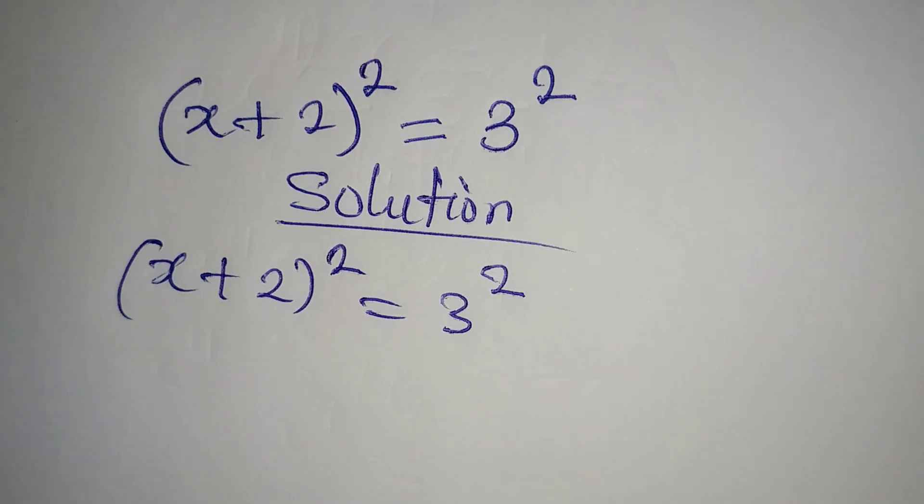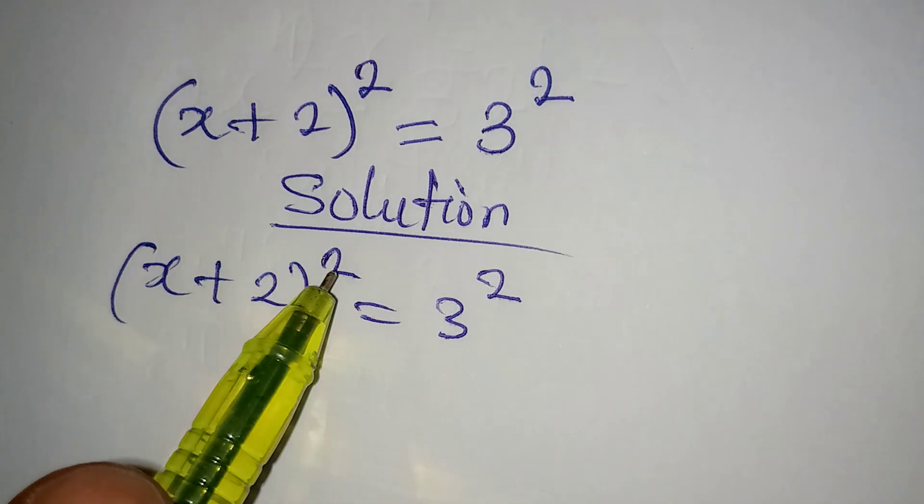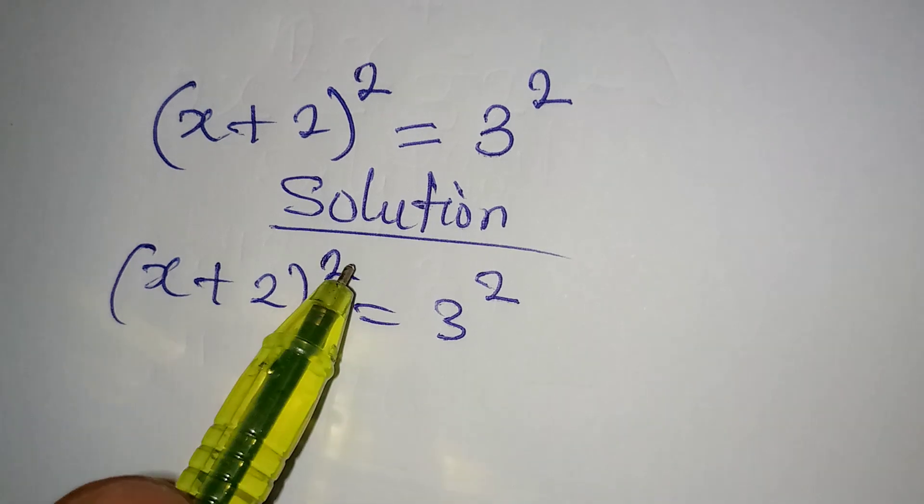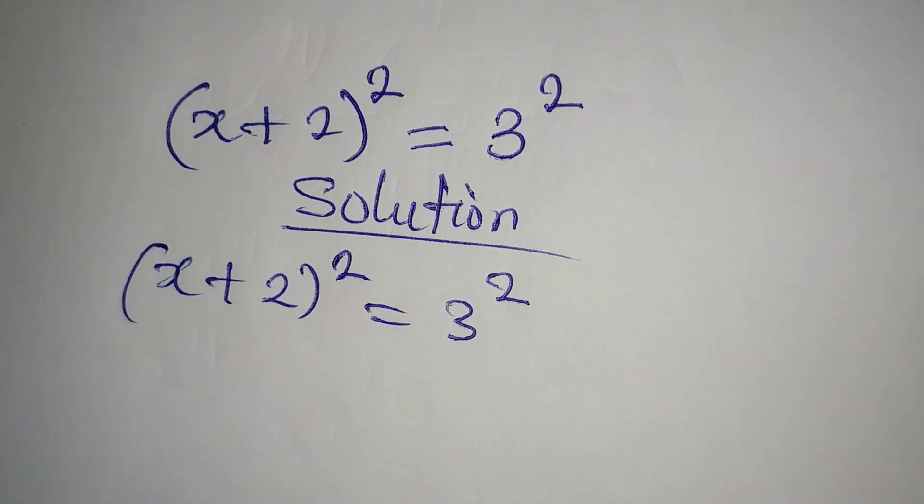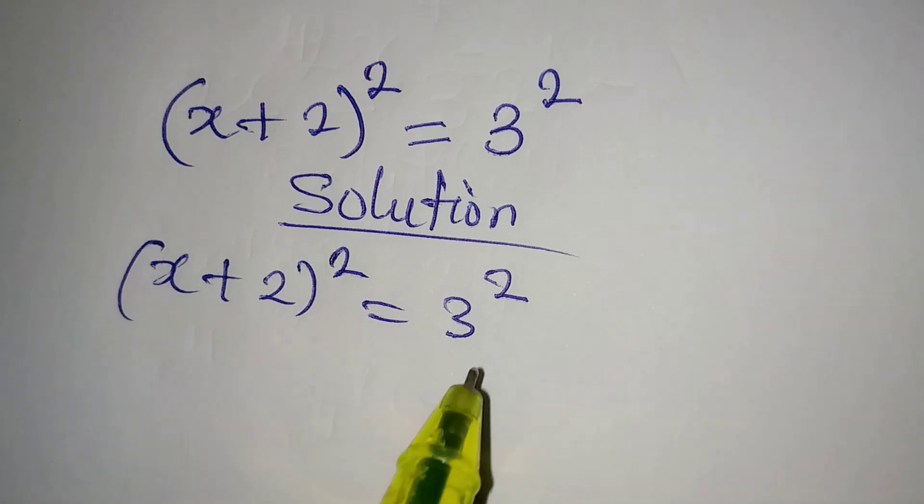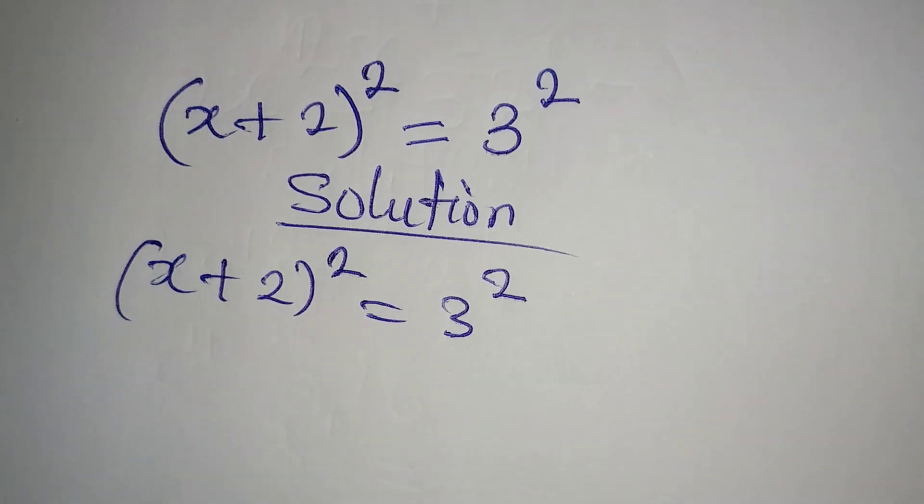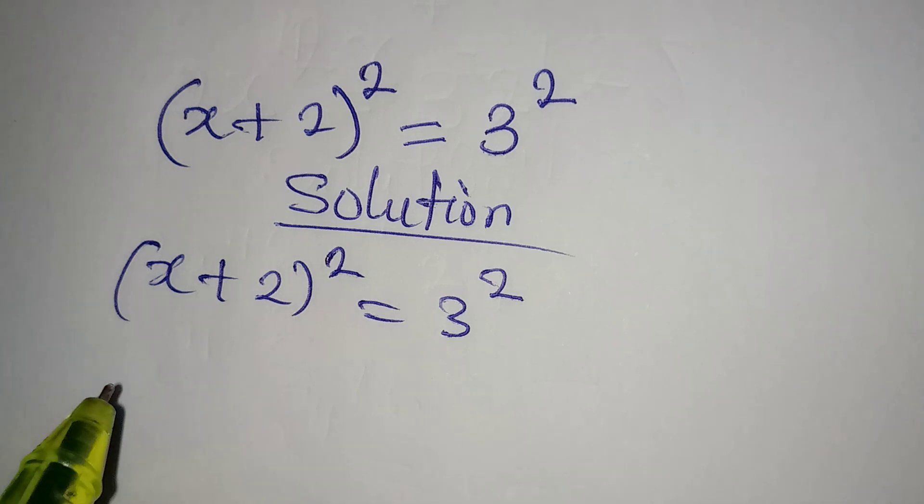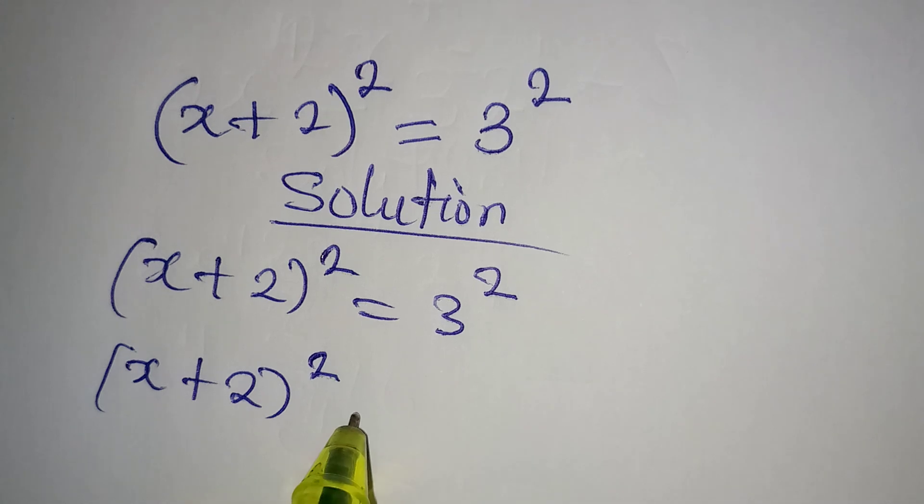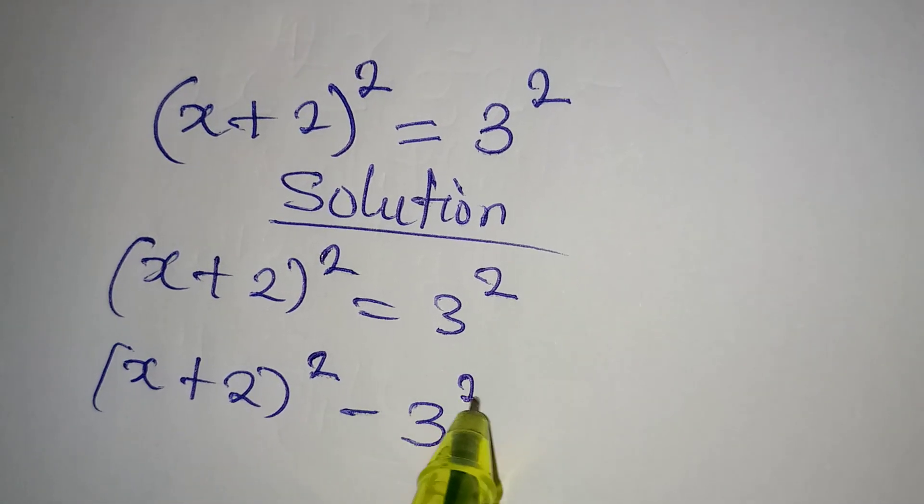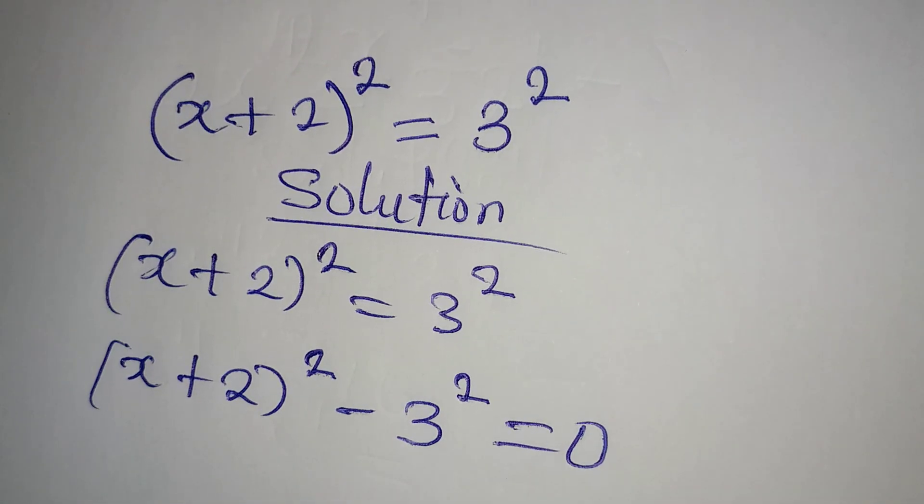Now if you are going to deal with this and you equate the basis because the powers are the same, you will not be completely correct. So what we are going to do is apply difference of two squares so that x plus 2 to the power of 2 minus 3 to the power of 2 is equal to 0.